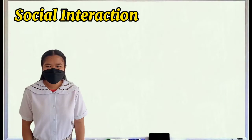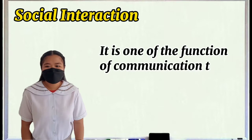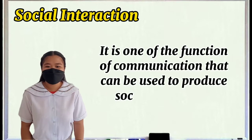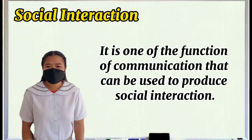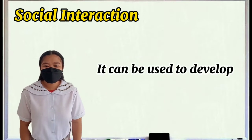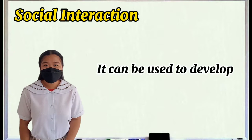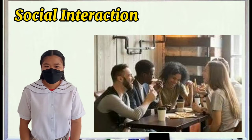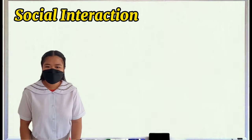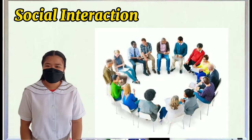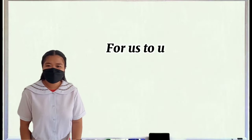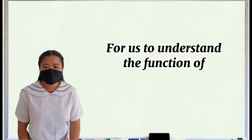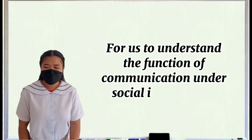The second function is social interaction. Social interaction is a function of communication that can be used to produce social interaction. It can be used to develop bonds, intimacy, relations, desires, decisions, and connections with others. To understand this function, let's watch this example.